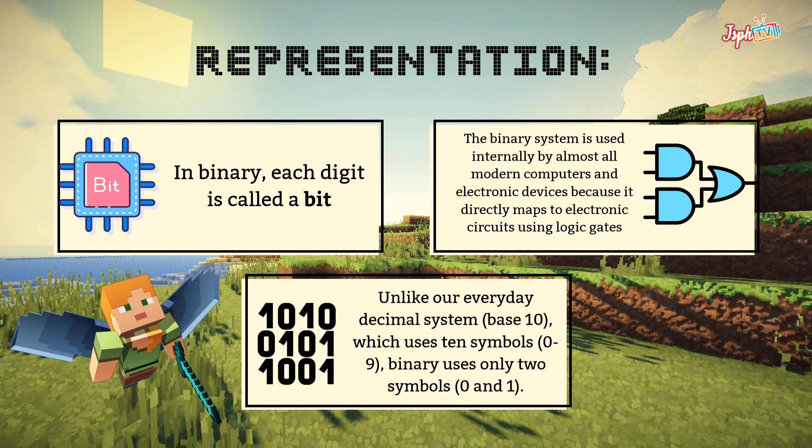In binary, each digit is called a bit. The binary system is used internally by almost all modern computers and electronic devices because it directly matches electronic circuits using logic gates. Unlike our everyday decimal system which uses 10 symbols, binary uses only two symbols, 0 and 1.